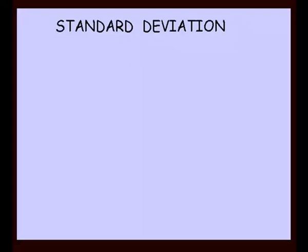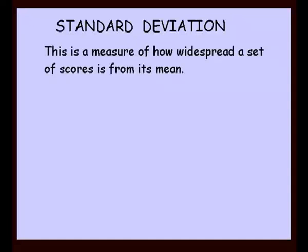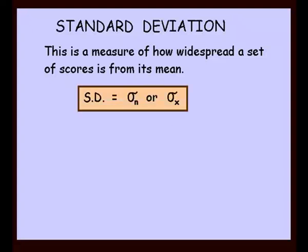We'll look at now a lesson on standard deviation. This is a measure of how widespread a set of scores is from its mean. The symbol for standard deviation looks like an O with a little hat, or the same symbol with a little x next to it. You'll be looking for that symbol on your calculator when it comes time to do that.